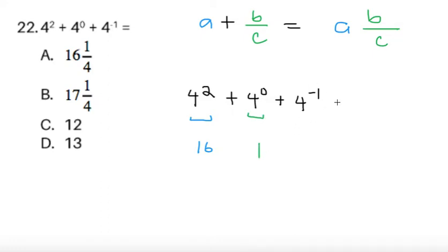And then negative exponents, 4 raised to negative 1. What we have to do is bring 4 raised to negative 1 into the denominator and make it positive. So 1 over 4 raised to 1, which gives you 1 fourth. So we're evaluating 16 plus 1 plus 1 fourth. Just from here, we can already see the answer is 17 plus 1 fourth, something greater than 17.